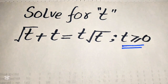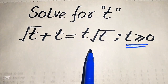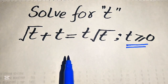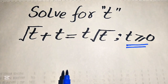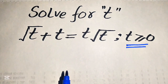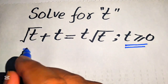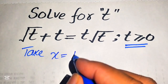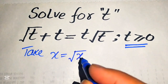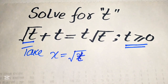We can only solve this problem for the positive values of t. First, we need to remove the radical sign. I'll solve this in a different approach — I hope you like this method, but if you have another method in mind, please write it in the comment section. First, we take x equals the square root of t, so we substitute: square root of t equals x.